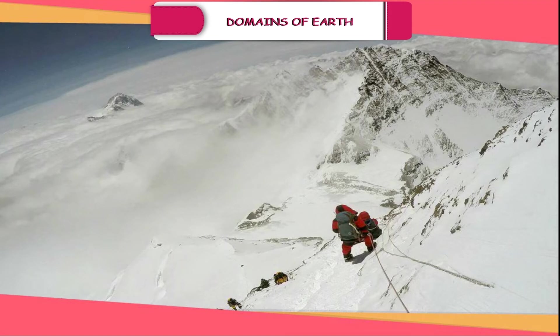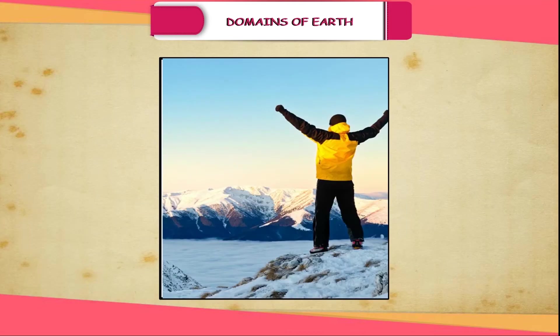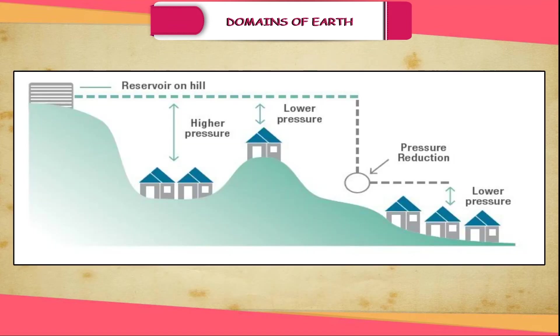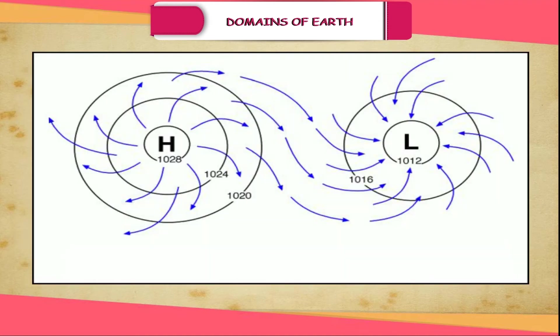Air has weight and exerts pressure on Earth's surface. But we do not feel this pressure because it is balanced by the pressure inside our bodies. The atmospheric pressure varies from place to place. Some areas experience high pressure and some areas low pressure. Air moves from high pressure to low pressure, and moving air is known as wind.